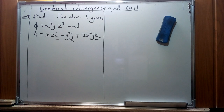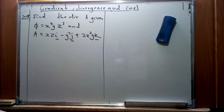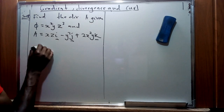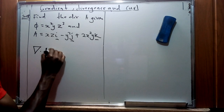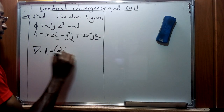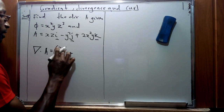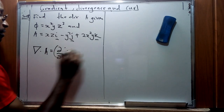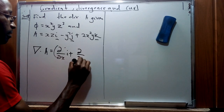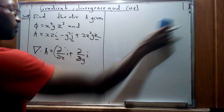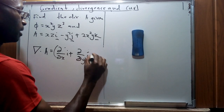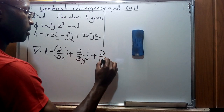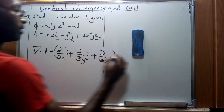We have already discussed how to represent a divergence. A divergence is given as del dot A, and del can be represented with its i, j, and k components corresponding to x, y, and z respectively.